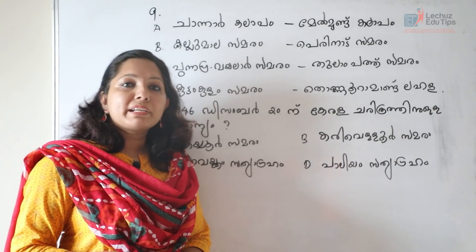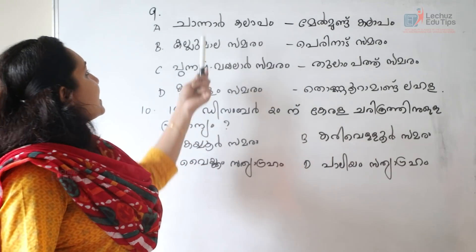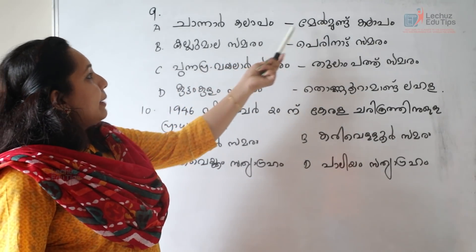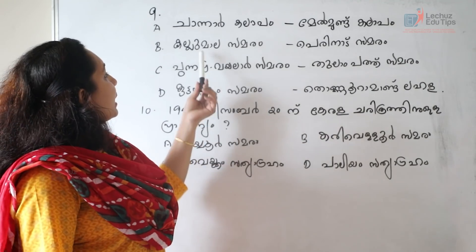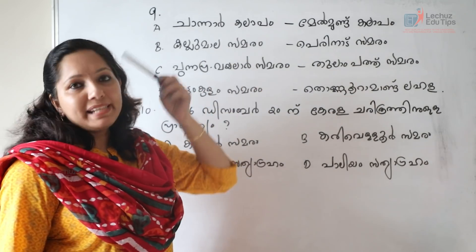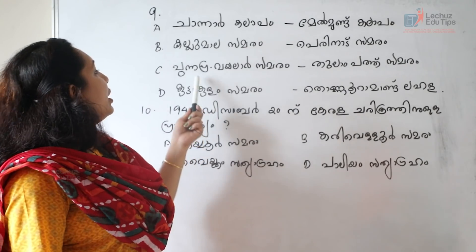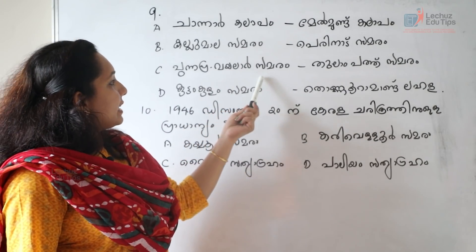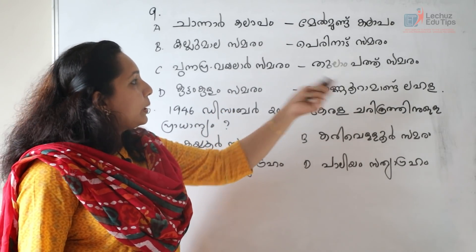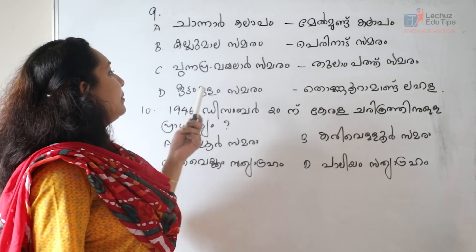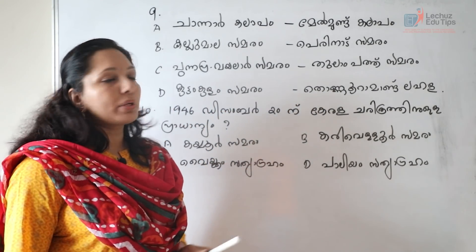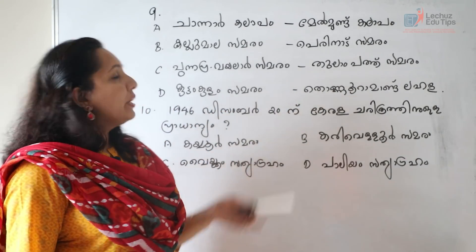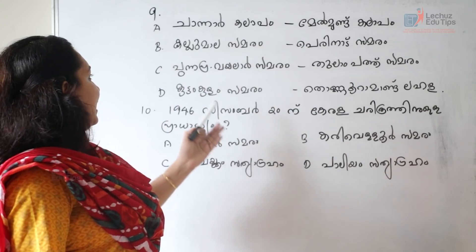Question number 9. Chanaar Kalaava, Melmunda Kalaava, Kalmala Samarim, Perinad Samarim, Punyapra Vailar Samarim, Tulaampathu Samarim, Kuttangulam Samarim, Tundnuramandu Lihala.